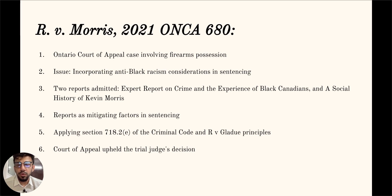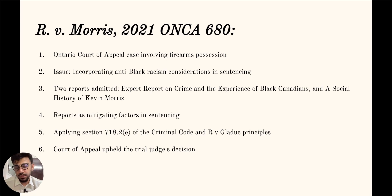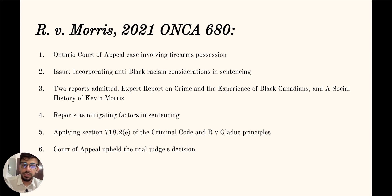Justice Nakatsuru admitted two reports relevant to Morris' situation. The first was the Expert Report on Crime, Criminal Justice and the Experience of Black Canadians in Toronto, Ontario, which highlighted historical and social factors influencing the predicament of Black Canadians. The second was A Social History of Kevin Morris, prepared by a clinical social worker, which provided evidence of Morris' socioeconomic and personal circumstances. Justice Nakatsuru held that these reports, particularly Morris' personal circumstances, were mitigating factors with significant bearing on his sentence, as per section 718.2(e) of the Criminal Code.